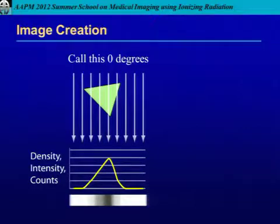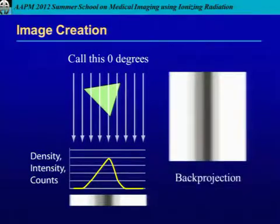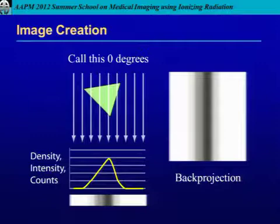To create our image from only that one projection — that's all we know — our image would look like that one-dimensional strip. You hear this referred to as smearing the data back, but it's really just the data set covering the entire field of view. This is called back projection.